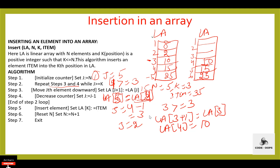Repeat steps 3 and 4 while j is greater than or equal to k. Now the value of j is 2, and 2 is not greater than or equal to 3, so the condition is evaluated to be false. Control transfers to step 5.